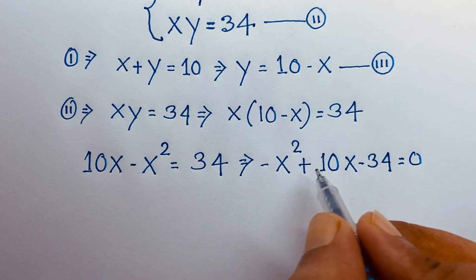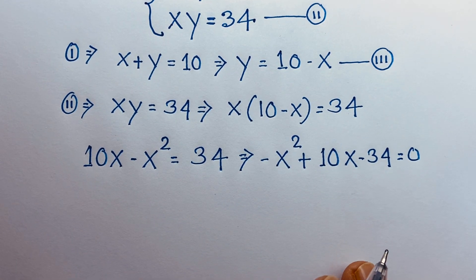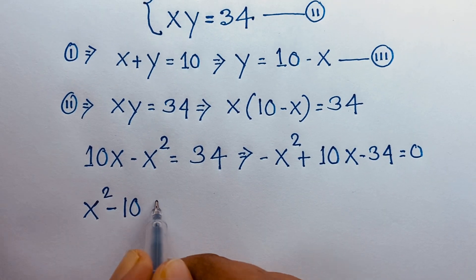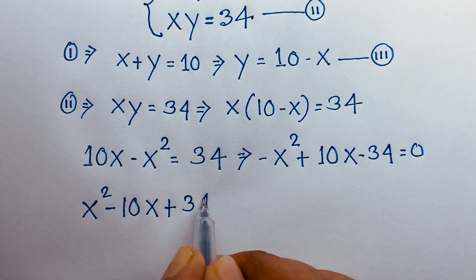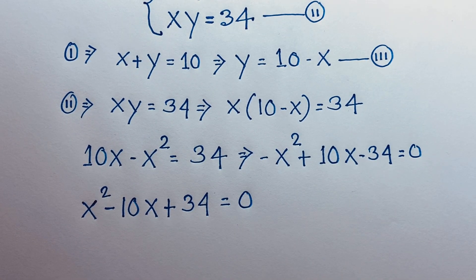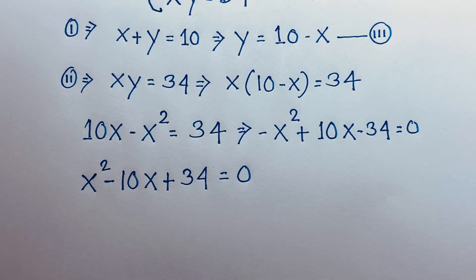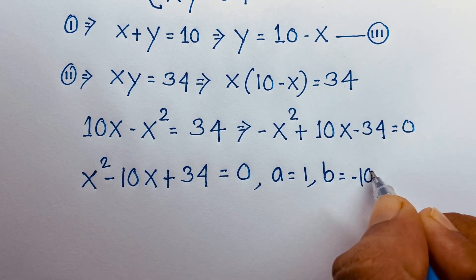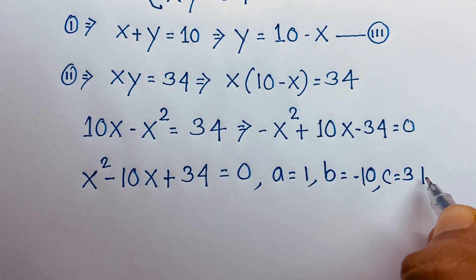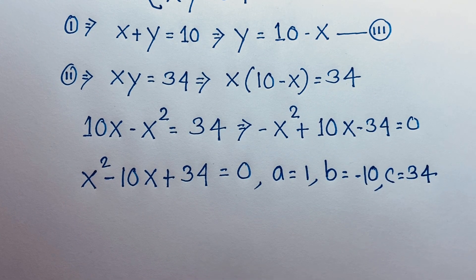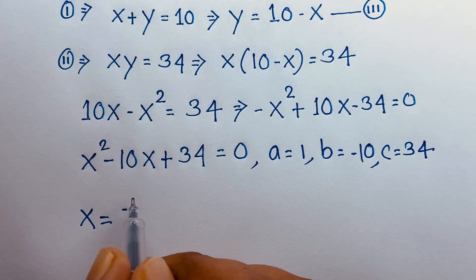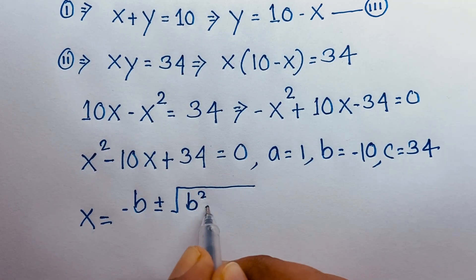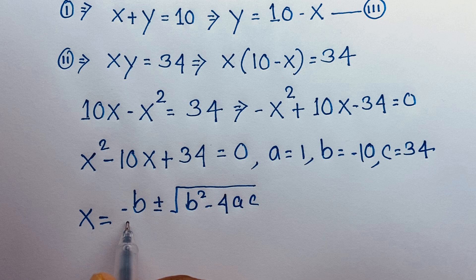Then I multiply both sides by negative, so this becomes positive x squared minus 10x plus 34 is equal to 0. So we find a nice quadratic equation where a is equal to 1, b is equal to minus 10, and c is equal to 34. We apply the quadratic formula: x equals minus b plus or minus square root of b squared minus 4ac, over 2a.